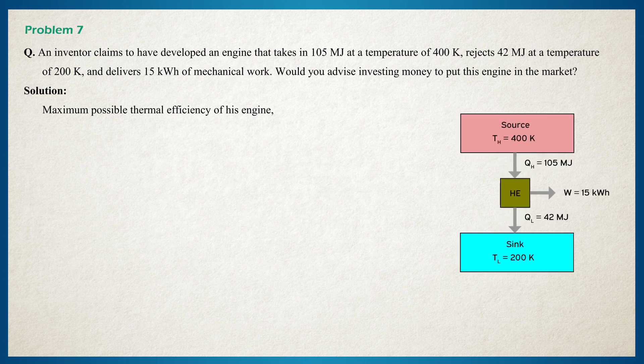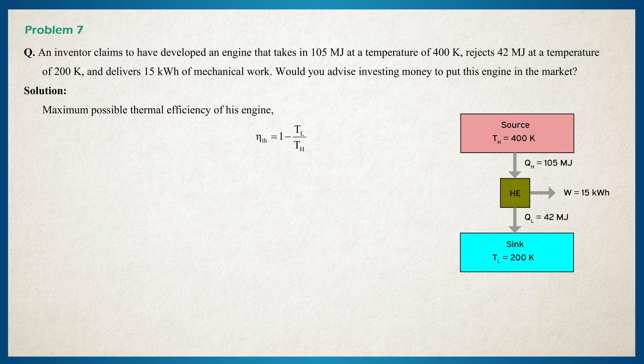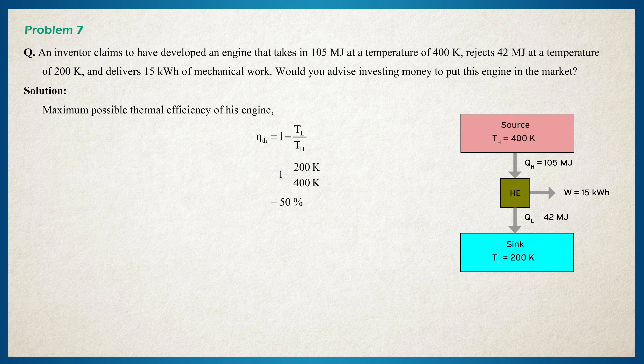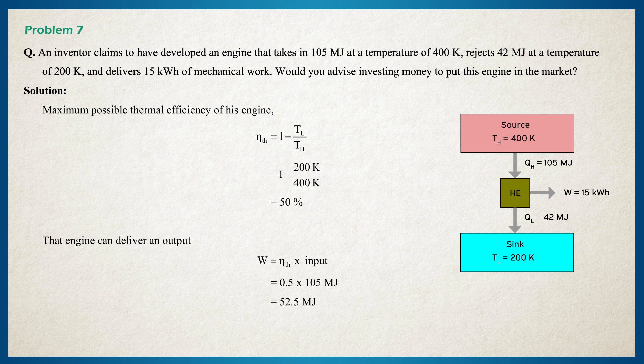Maximum possible thermal efficiency of this engine is equal to 1 minus TL by TH, which is equal to 1 minus 200 by 400, that is 50 percent. The engine can deliver an output equal to thermal efficiency times input, that is 0.5 times 105 megajoules, which is equal to 52.5 megajoules.